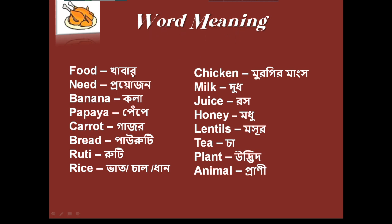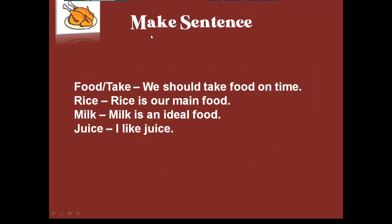এখন word meaning বলো জানবো। শব্দের অর্থ: food - খাবার, need - প্রয়োজন। Banana - কলা, papaya - পেঁপে। Carrot - গাজর, bread/pauruti - পাউরুটি, roti - রুটি, rice - ভাত/চাল/ধান। Chicken - মুরগির মাংস, milk - দুধ, juice - রস, honey - মধু, lentils - মুসুর।